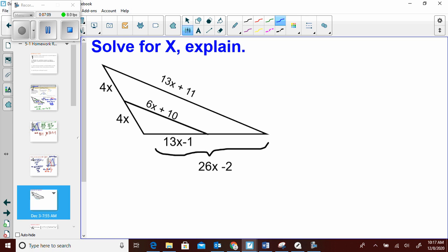Last one. We're going to solve for x here. First, do I have a mid-segment? Well, 4x is equal to 4x. Are they the same? Let's see. 26x minus 2 minus 13x minus 1. Right? Because that's how we find the missing piece. 26 minus 13 is 13x. Negative 2 minus negative 1 is minus 1. So that's also 13x minus 1. They're the same.